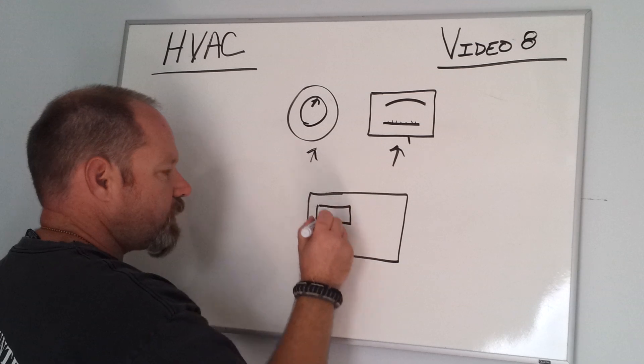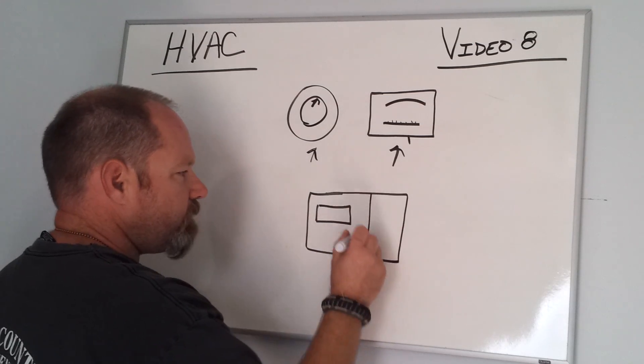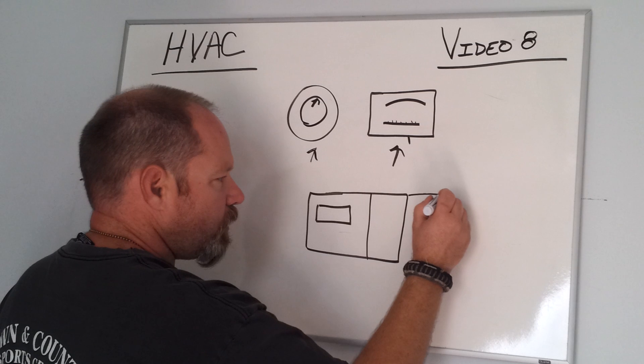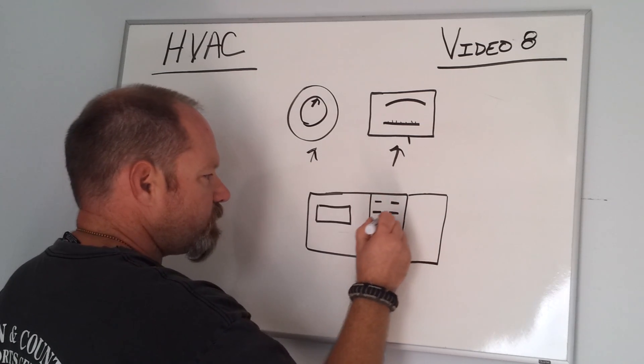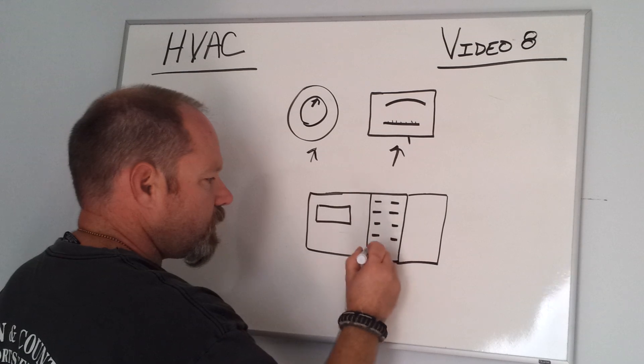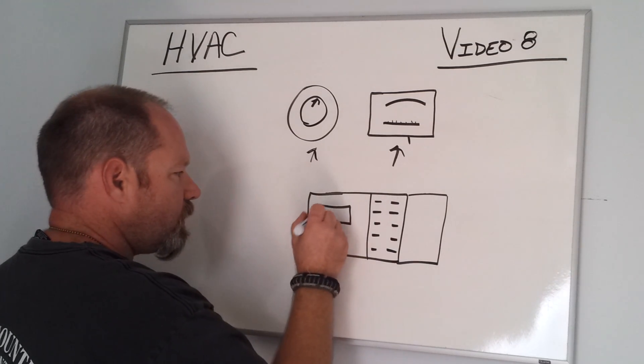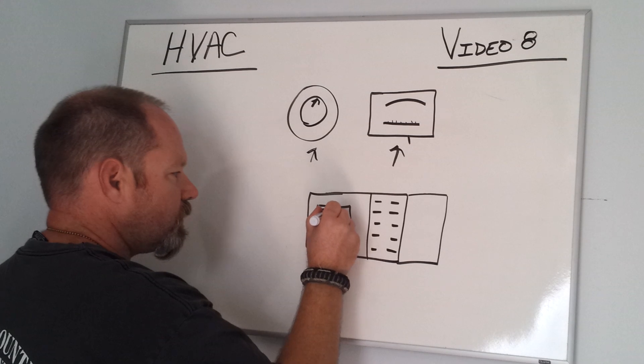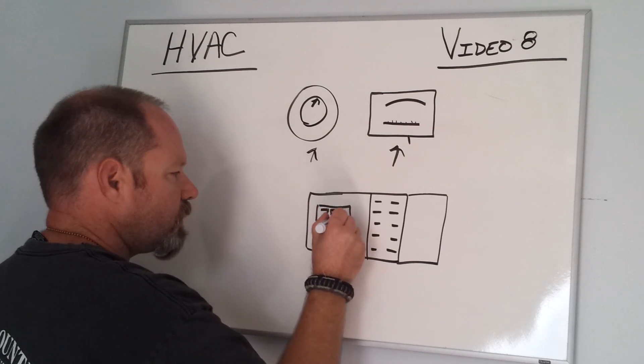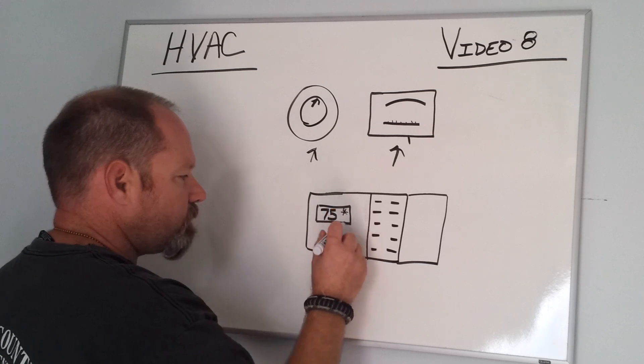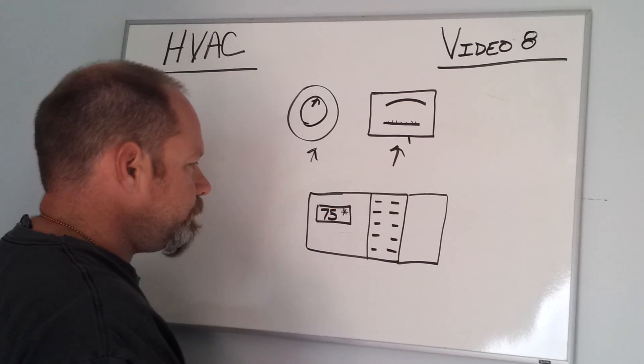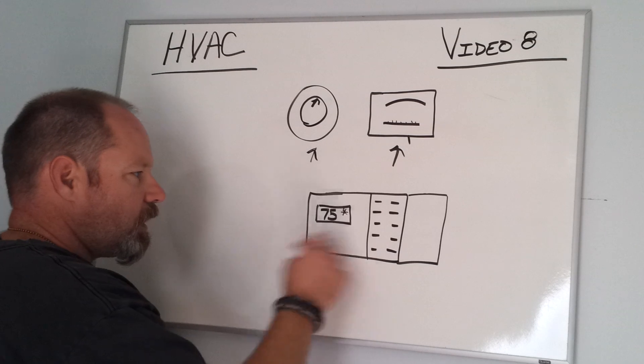You may also have a programmable thermostat—several different kinds. It would have a door that you could open up, and when you open that door you're going to see a bunch of programming buttons. Here might be your indicator as to your temperature in the house and whether it's heat or cool. You might see a fan.